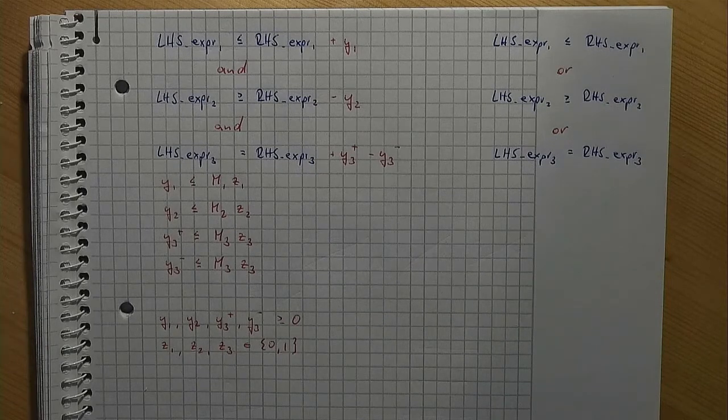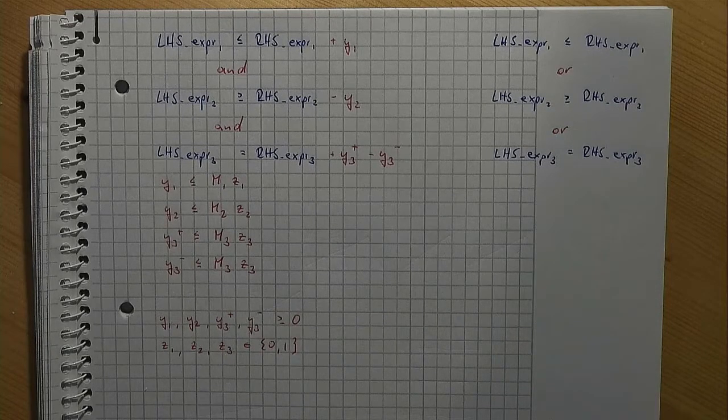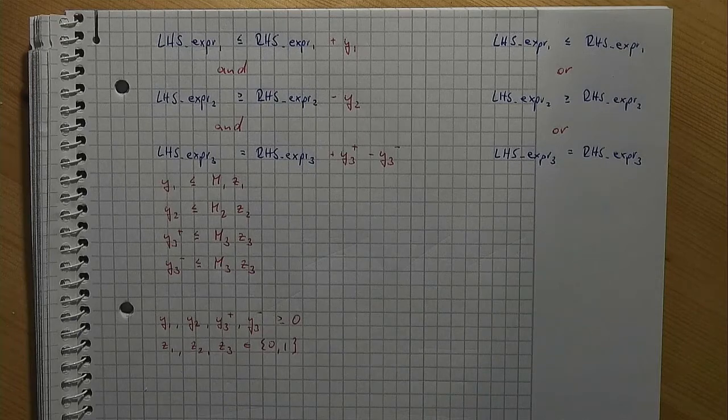The following constraint makes sure that at least one of the original constraints must hold, which is the case if at most two of them are allowed for being removed.